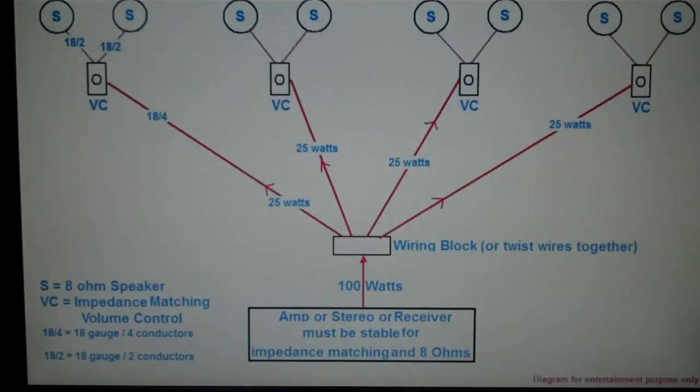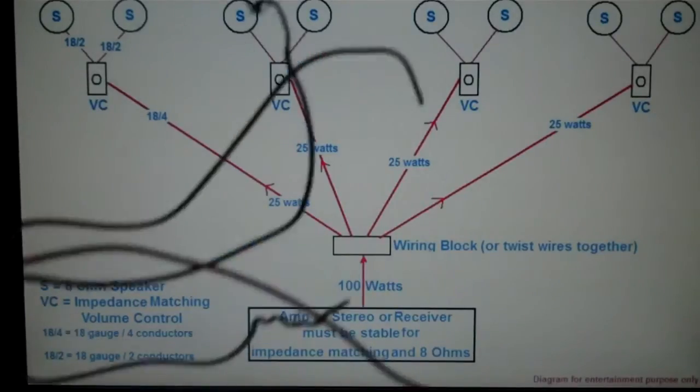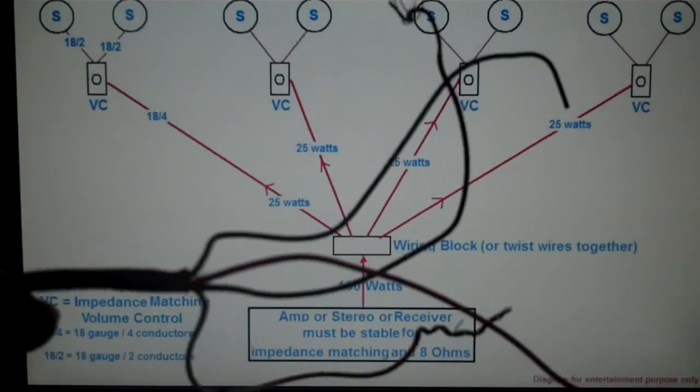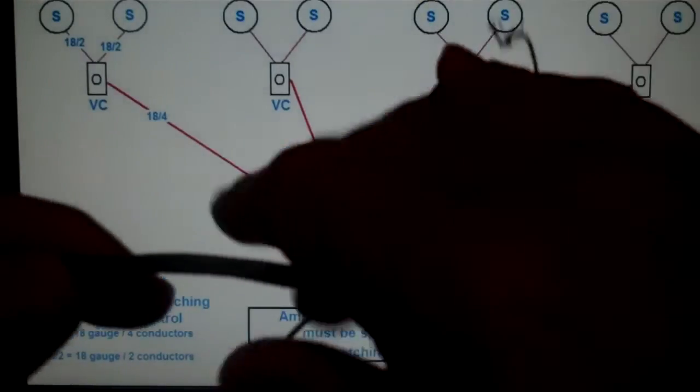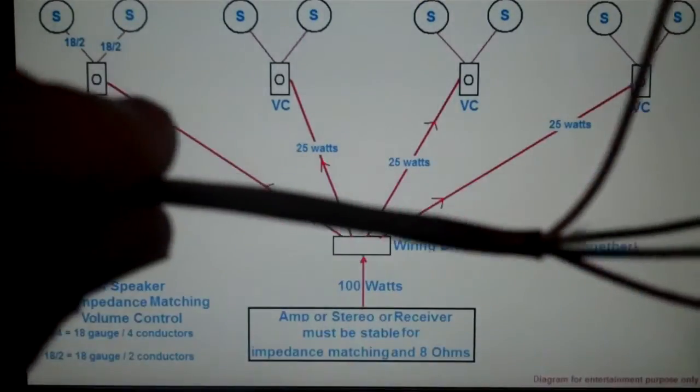Now, in this diagram, we also show you an 18-gauge four-conductor wire. That's an 18-gauge four-conductor wire. One, two, three, four. Four conductors in one jacket. It's gray.